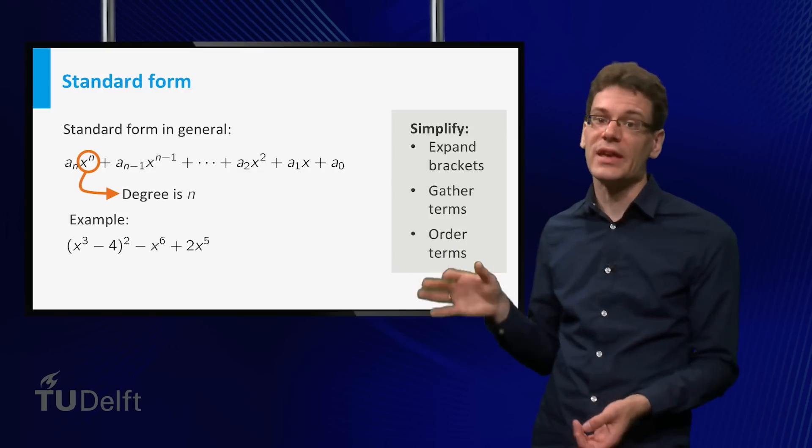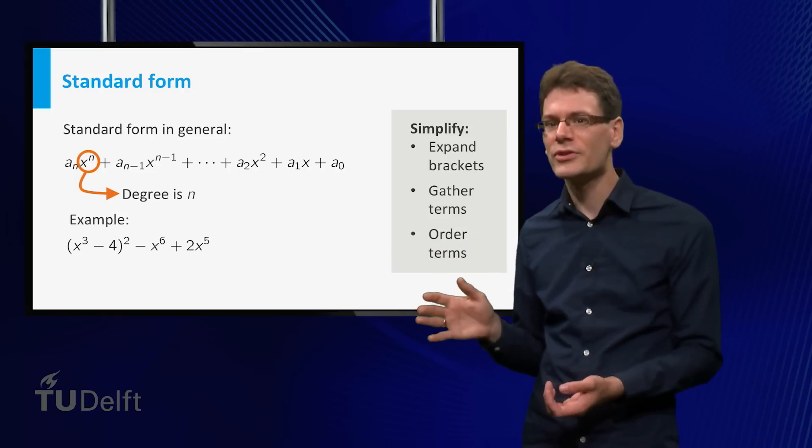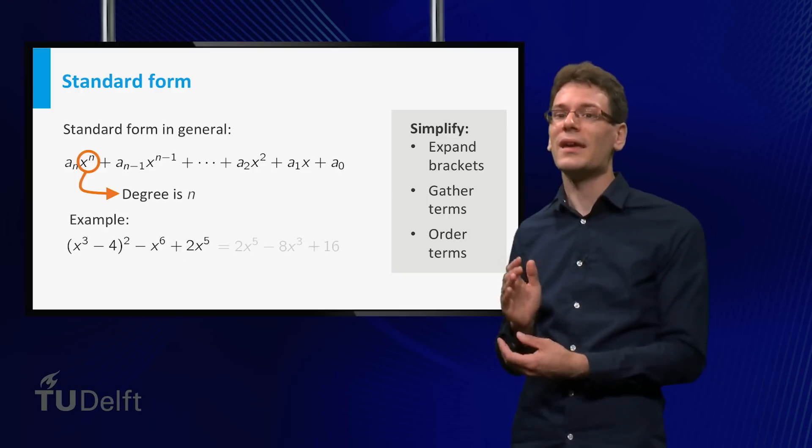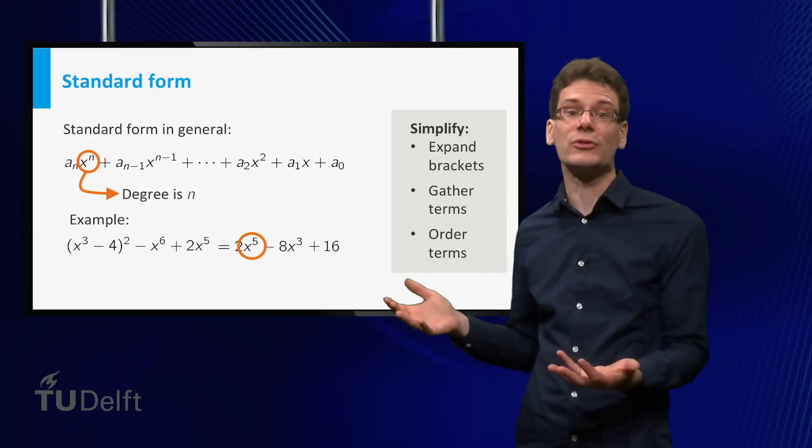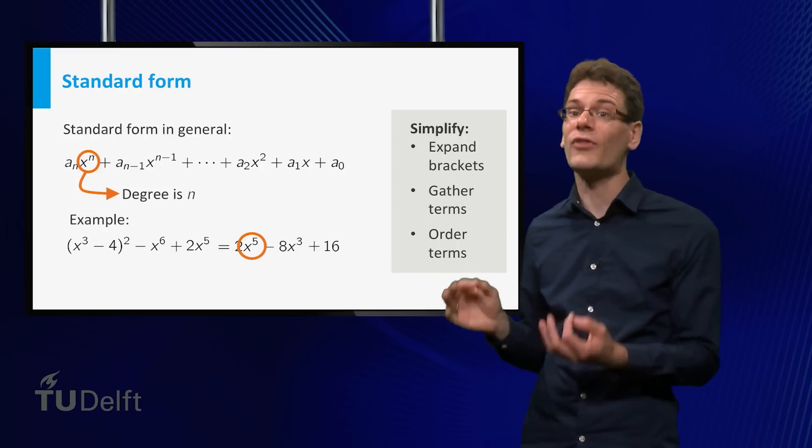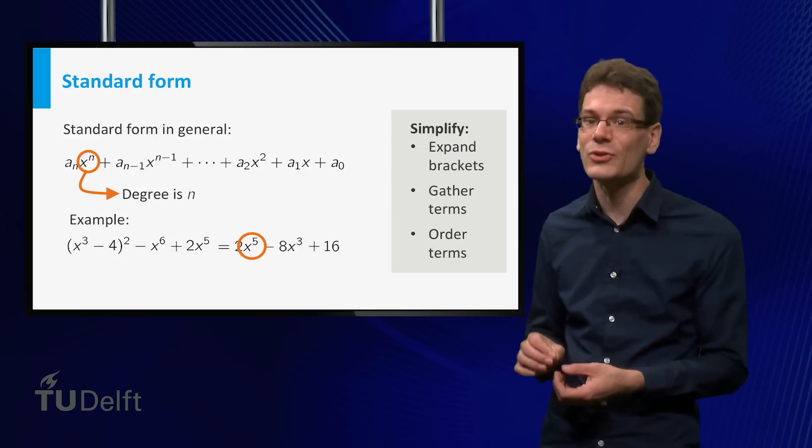You might say 6, since that is the highest power that occurs, but that is not correct. First rewrite it to standard form. If you simplify, you find that the terms containing x to the power 6 cancel. The highest occurring power is 5, so that's the degree. I invite you to check the calculation yourself.